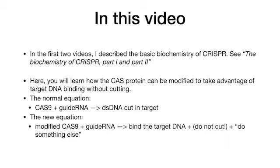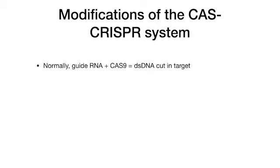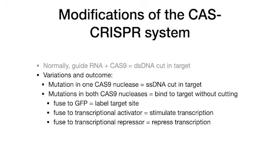The normal equation — Cas9 plus guide RNA equals a double-stranded DNA cut in the target — is now changed to the new equation: a modified Cas9 plus guide RNA binds the target DNA and does something else. Normally, guide RNA plus Cas9 results in a double-stranded DNA cut in the target. There are several ways to modify Cas9 and obtain a different outcome. Let's introduce them rapidly.